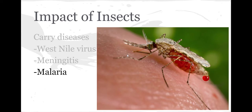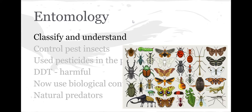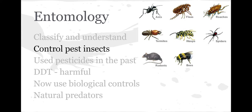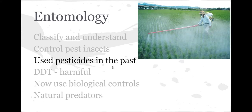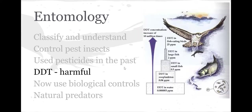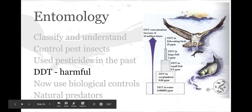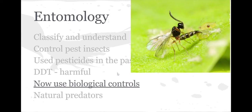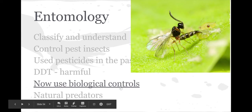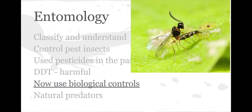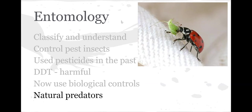Entomology is a special category of science where we classify and understand different kinds of insects. We also learn about controlling insects. In the past, we've used pesticides to help control them, but we found that DDT, which is a very harmful substance, can actually pass up a food chain and kill top predators. So DDT is not being used anymore. Instead, we use biological controls, like sending in a particular wasp to knock out a particular harmful pest. We bring in natural predators to eat the pests.